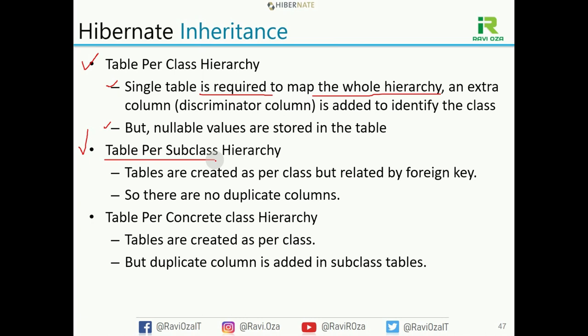In table per subclass, tables are related using a foreign key, so there are no duplicate columns. Now the third strategy is table per concrete class. The base class and each individual concrete class get their own table. For example, if you have five classes, then five equivalent tables are created. However, duplicate columns are added in the subclass tables.